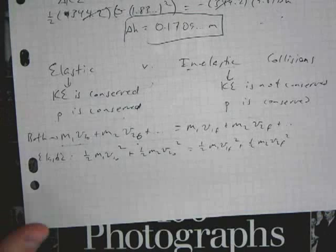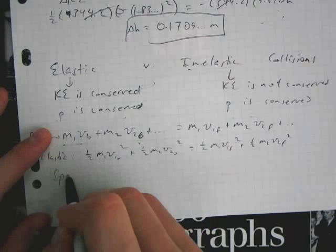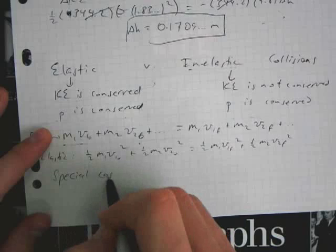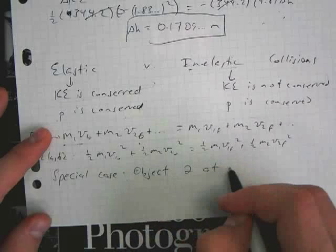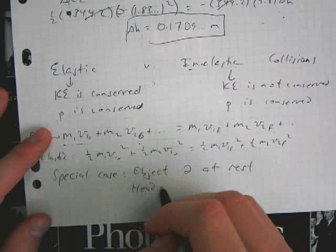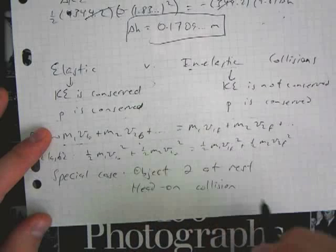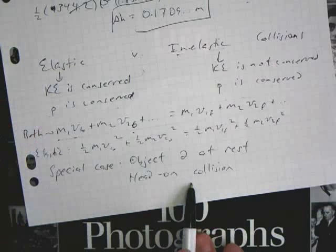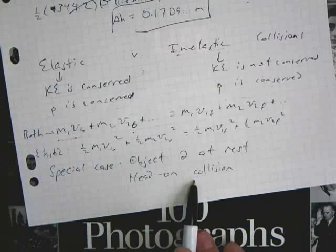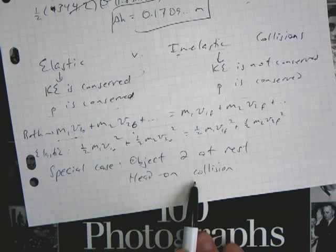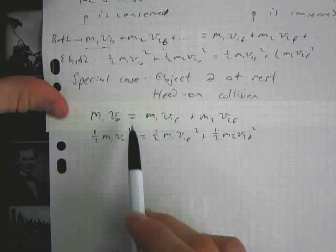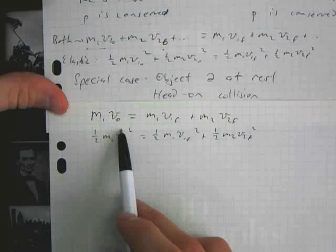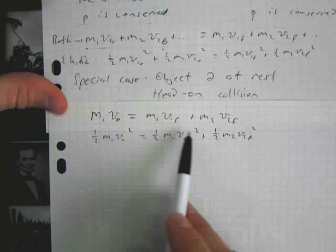For a particular case, and that special case that we're going to look at is for when object two is at rest and for a head-on collision. Because, in this case, the equation winds up being... the algebra is a little bit messy, but the result is pretty easy to use. So, I'm going to run through that. So, if object two is at rest, our equations reduce to this. We just get rid of object two from over here and instead of writing V1 naught, I'm just going to write V naught to simplify things. And then the right sides of our equations remain the same.